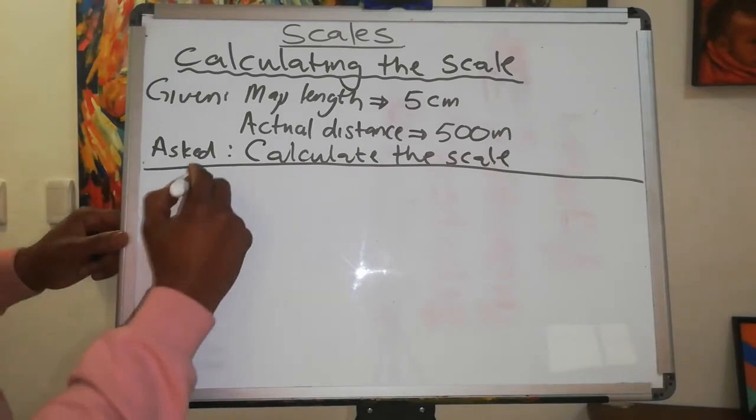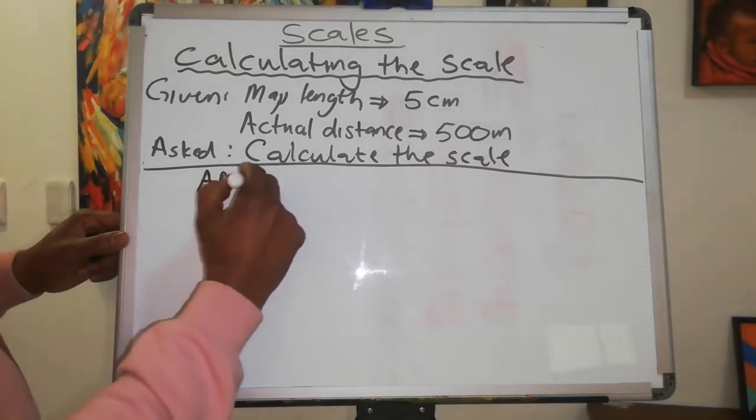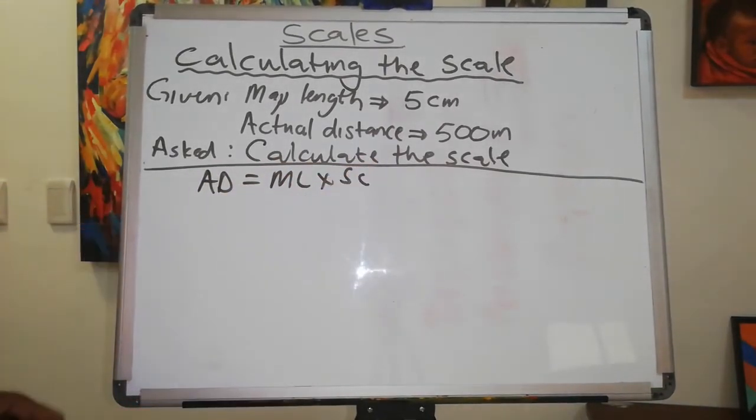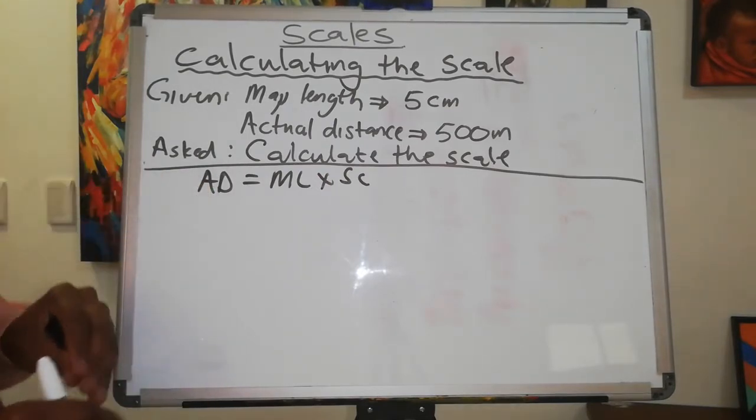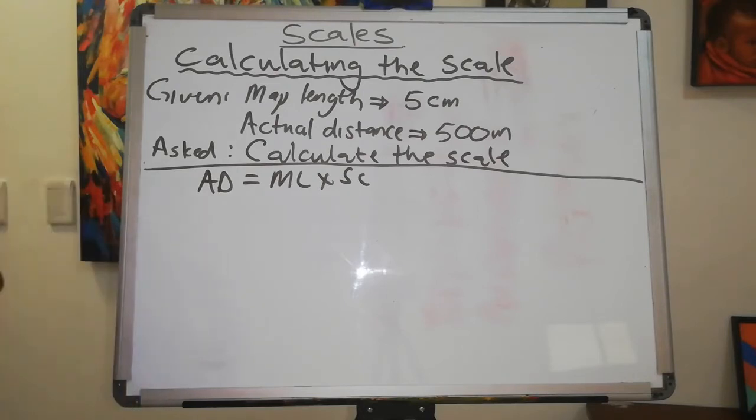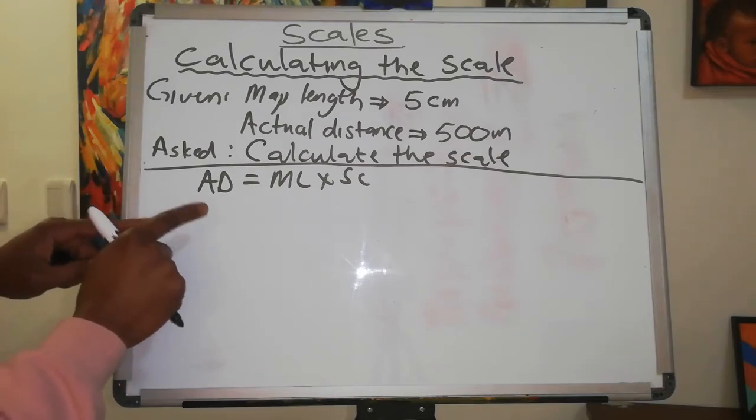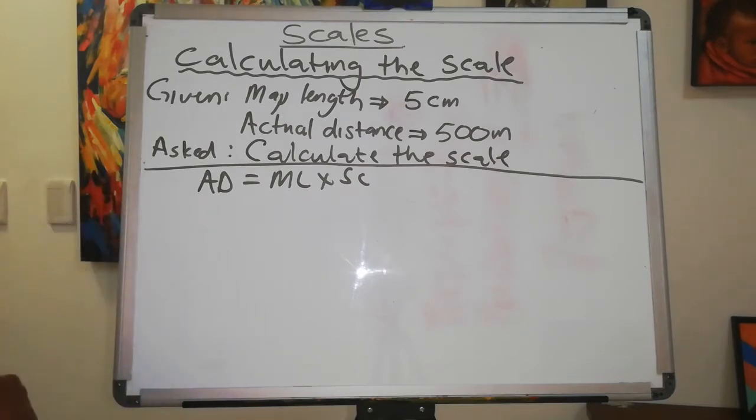So we start off with actual distance equals the map length times the scale. However, in this scenario, we are going to do the conversion first and then do the substitution. So we're not going to substitute into the equation immediately.